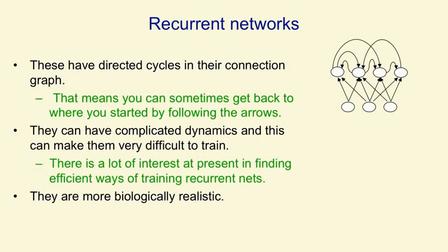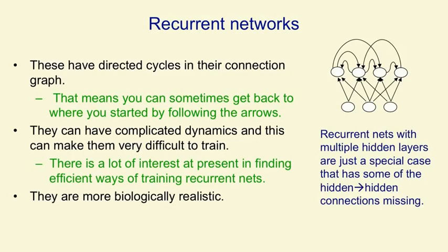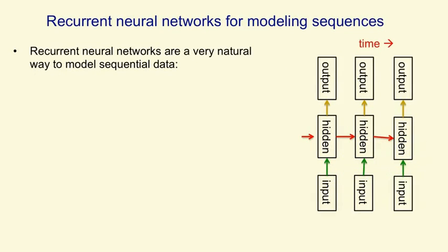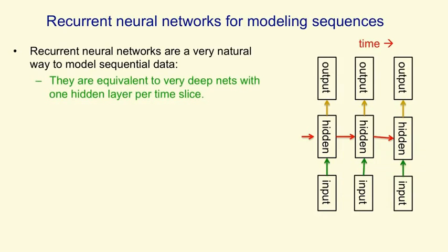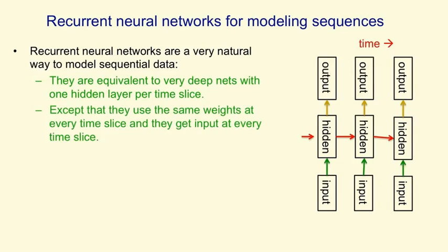They're also more biologically realistic. Recurrent neural networks with multiple hidden layers are really just a special case of a general recurrent neural network that has some of its hidden-to-hidden connections missing. Recurrent neural networks are a very natural way to model sequential data. We have connections between hidden units, and the hidden units act like a network that's very deep in time. At each time step, the states of the hidden units determines the states of the hidden units at the next time step. One way in which they differ from feedforward nets is that we use the same weights at every time step — the weight matrix depicted by each red arrow is the same at each time step.